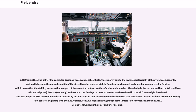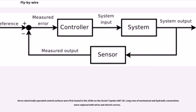The advantages of FBW controls were first exploited by the military and then in the commercial airline market. The Airbus series of airliners used full authority FBW controls beginning with their A320 series, though some limited FBW functions existed on the A310. Boeing followed with their 777 and later designs. Servo-electrically operated control surfaces were first tested in the 1930s on the Soviet Tupolev ANT-20.